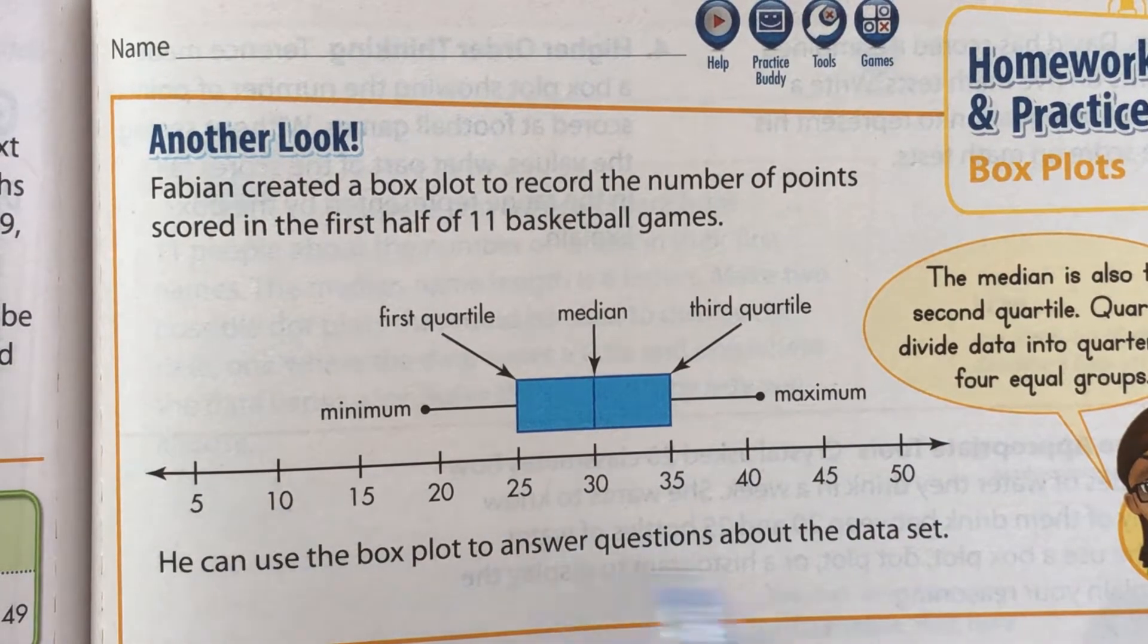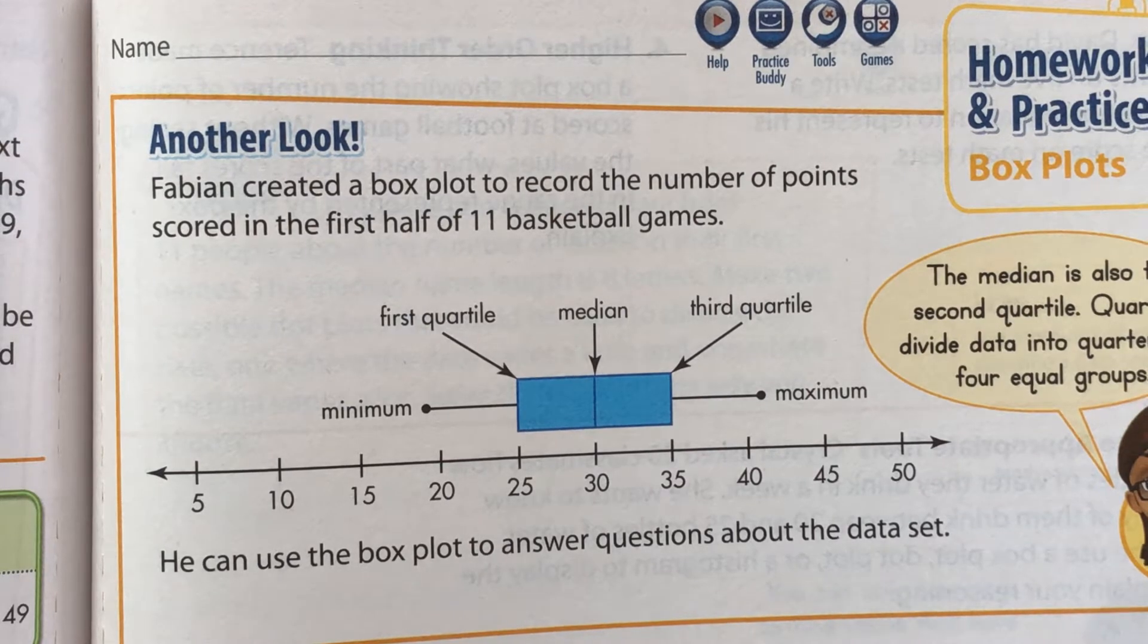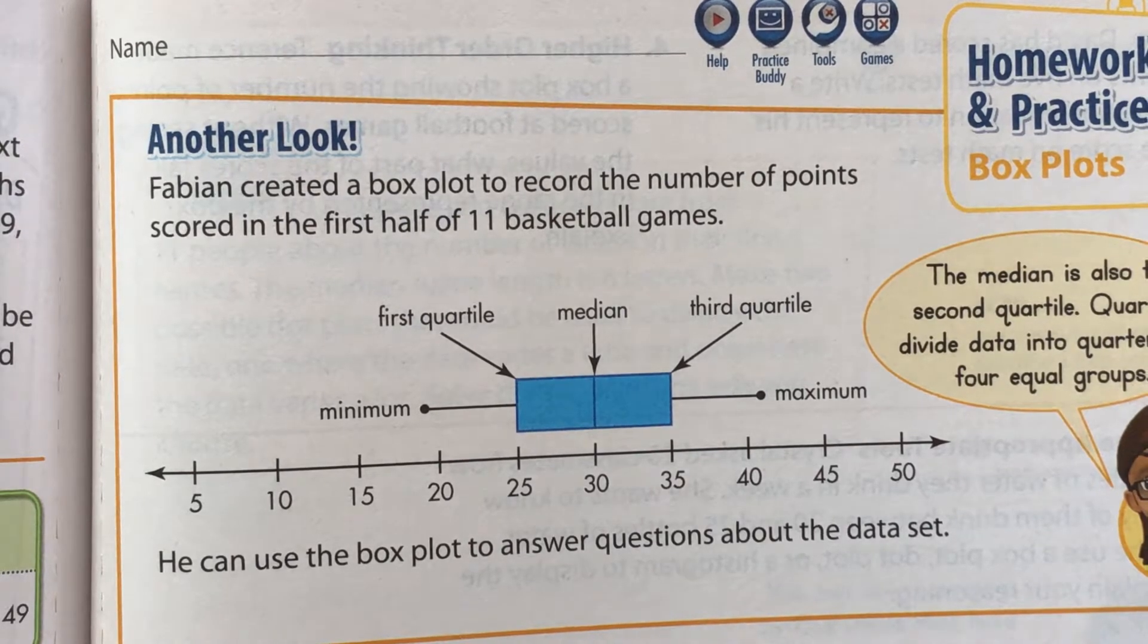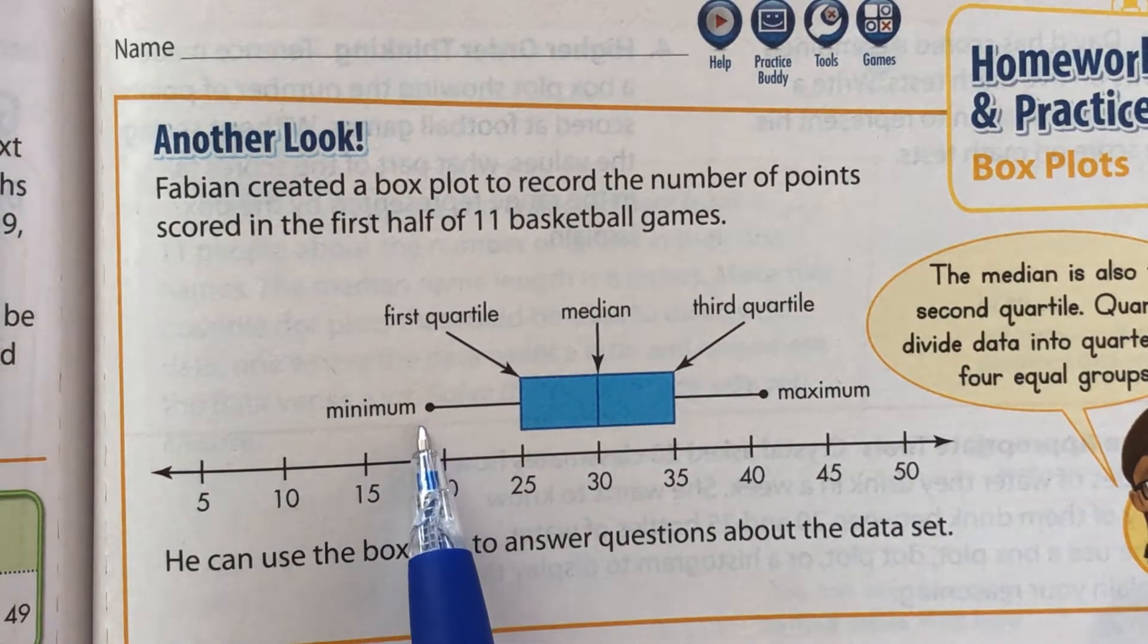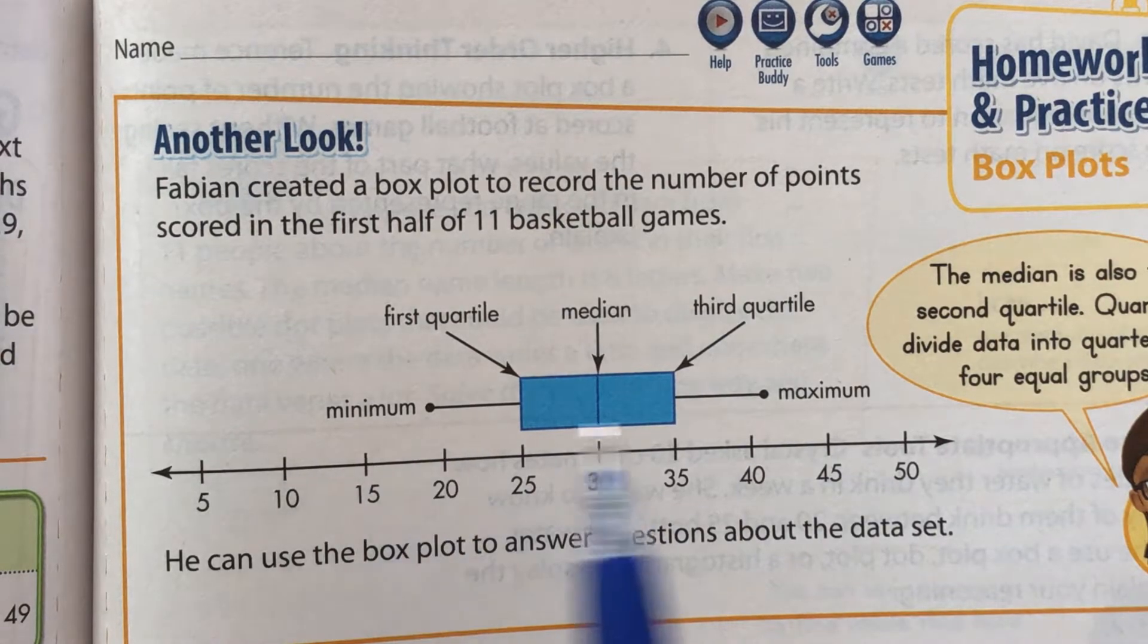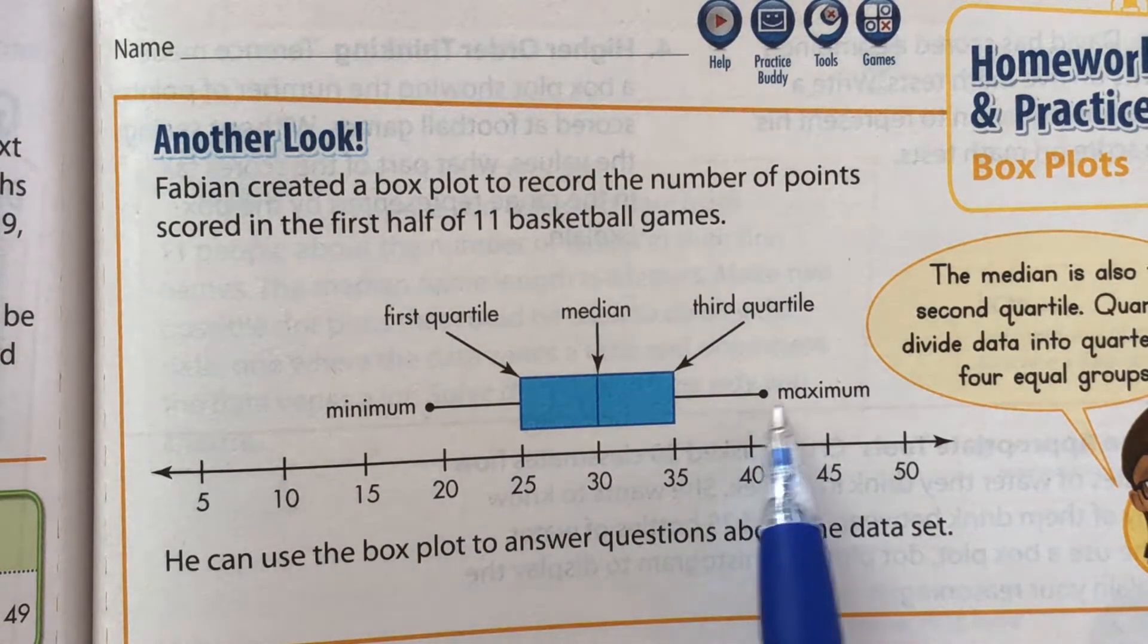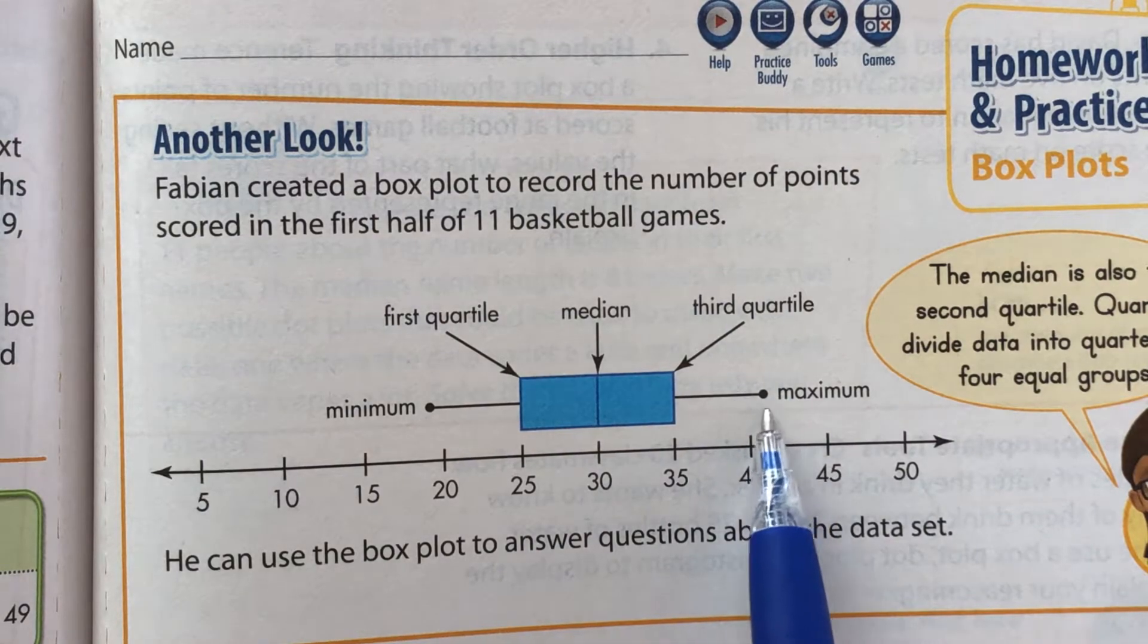So I just have this picture right here and I just wanted to go over the parts of a box plot again just to make sure you're feeling more comfortable with doing this. So we have a minimum, that's the first dot, and that's basically the lowest number in your group of data. We have a maximum, which is the last dot, the dot all the way to the right, and that's your greatest number in your group of data.